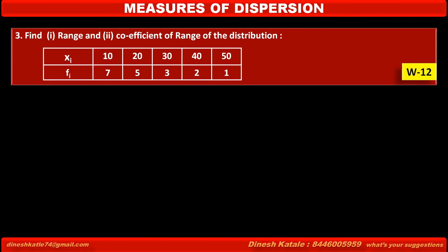Exercise 10.1, problem 3: Find range and coefficient of range of the distribution where values of xi are given as 10, 20, 30, 40, 50, and corresponding values of fi are given as 7, 5, 3, 2, 1. See solution.